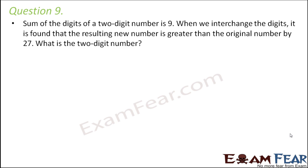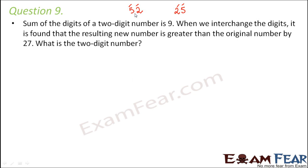Question number 9. The sum of the digits of a two-digit number is 9. When we interchange the digits, the resulting new number is greater than the original number by 27. What is the two-digit number? Before solving, let's consider an example: take 52. The digits 5 and 2 form the number 52, and interchanging gives 25. Also, 25 = 20 + 5 and 52 = 50 + 2. We'll use these concepts to solve.